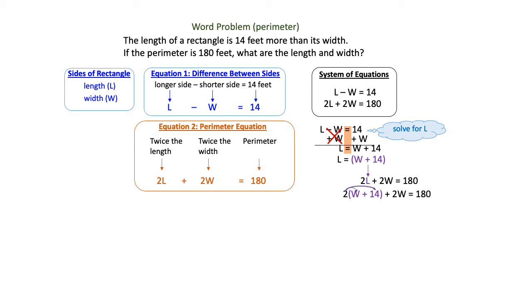The next thing to do is distribute the 2, and that will give me 2W plus 28 plus 2W equals 180. My like terms are 2W plus 2W. When I add those together, that gives me 4W plus 28 equals 180.